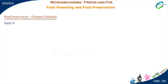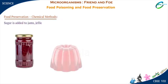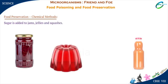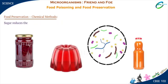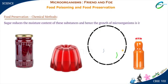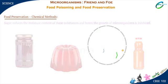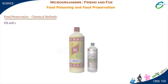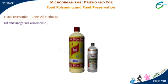Sugar is added to jams, jellies and squashes. Sugar reduces the moisture content of these substances and hence the growth of microorganisms is inhibited. Oil and vinegar are also used to preserve different food items.